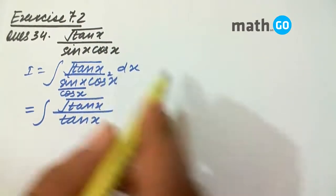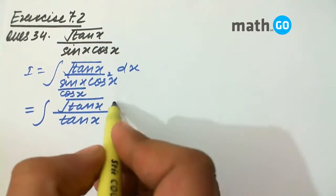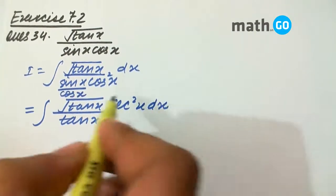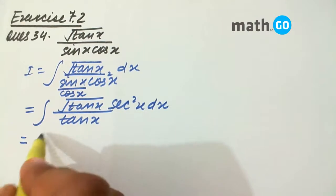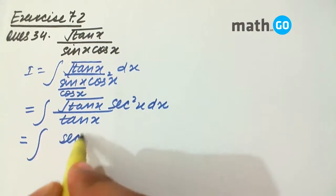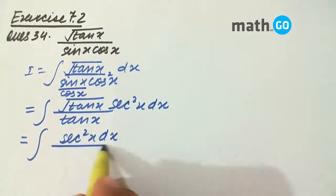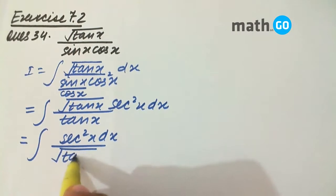And cos square x, if we take in the numerator, we will get sec square x dx, leaving us with sec square x dx upon root of tan x.